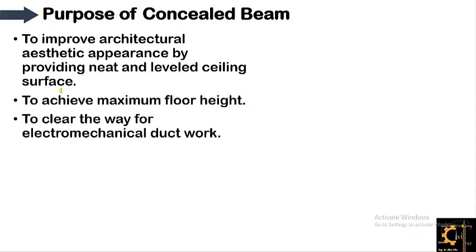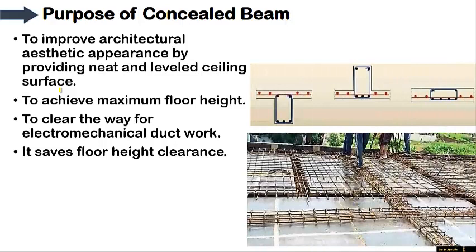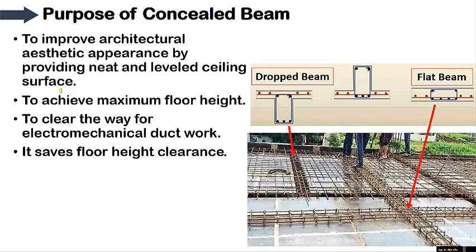Concealed beams are used to achieve maximum floor height and to clear the way for electromechanical ductwork — they save floor height clearance. As compared to a drop beam, which is visible from the underside of the slab, the flat beam or concealed beam cannot be seen from the underside and one cannot have any idea where it lies. Thus it performs the function of the beam while providing clear floor height.